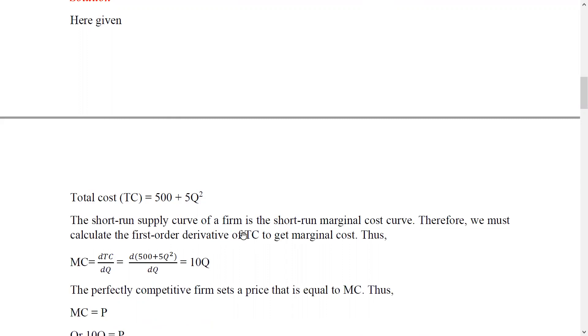We must calculate the first-order derivative of total cost to get the marginal cost. The marginal cost function is derived from differentiating TC = 500 + 5Q² with respect to Q. This gives us the short-run supply curve, which is the supply function of the firm.